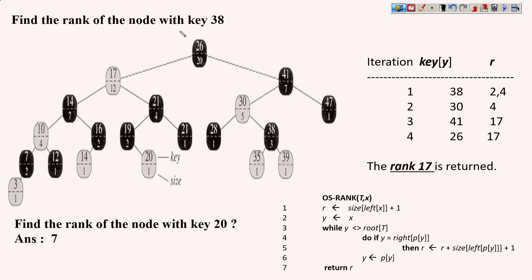Let's understand with an example. Let's say we want to know the rank of key 38. We start with the default rank: we look to the left subtree of the node containing 38, which has size 1, so the rank is 1 + 1 = 2. This is not the root, so we set Y to this node. Since Y is the right child of its parent, we update the rank: previous rank 2 plus the sibling's size of 1 plus 1 equals 4. So the rank becomes 4 and we move up.